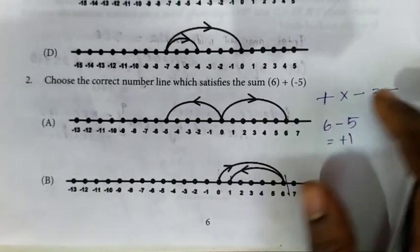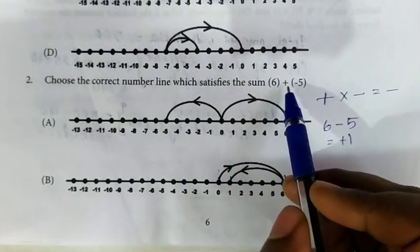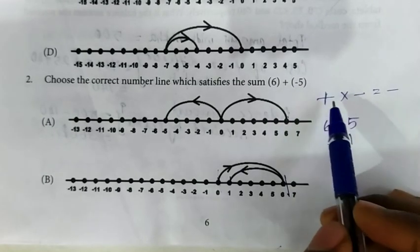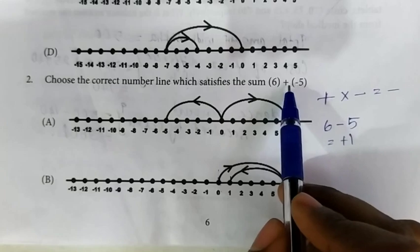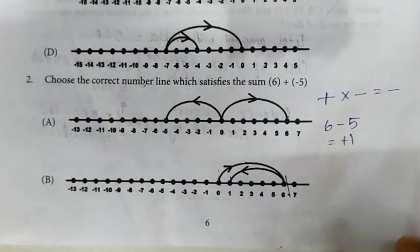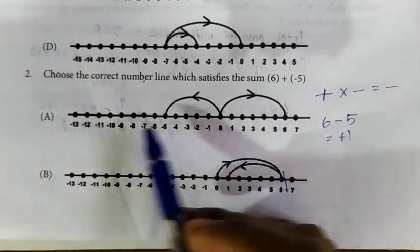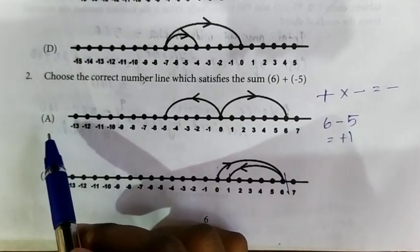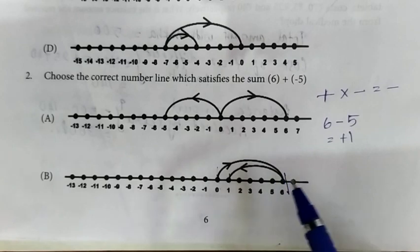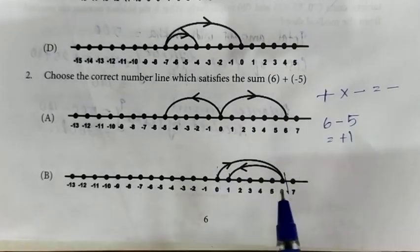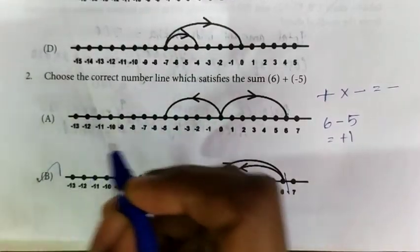Second question: choose the number line which satisfies the sum of 6 plus minus 5. We know that plus into minus is equal to minus. So 6 minus 5 gives plus 1 as the answer. Check the number line. Option A does not give the value of plus 1. Option B gives the value of plus 1. So option B is the right answer.